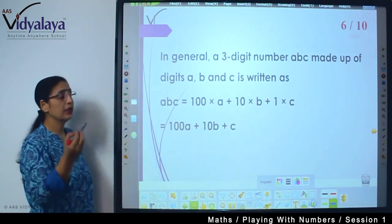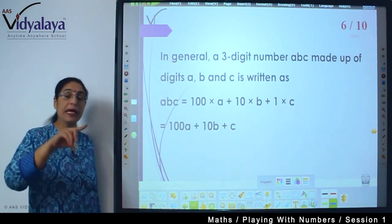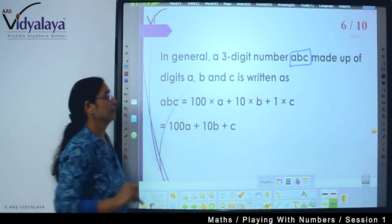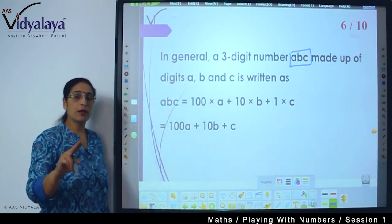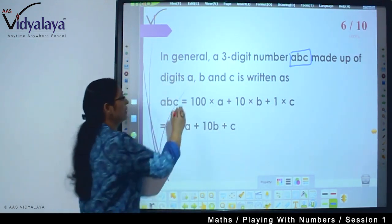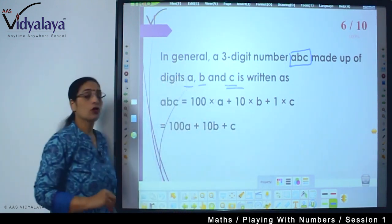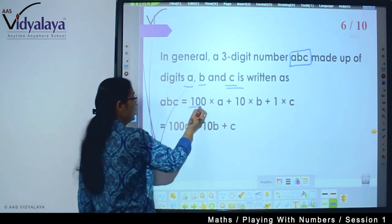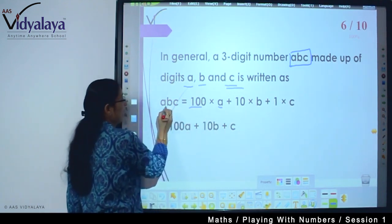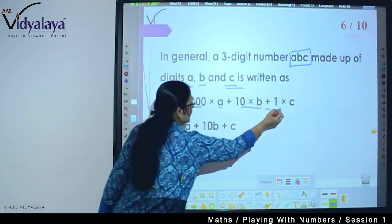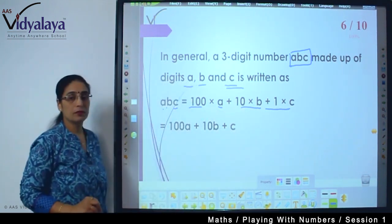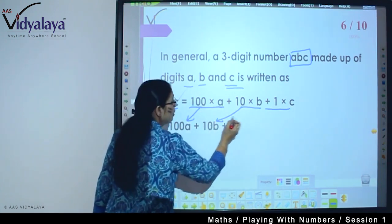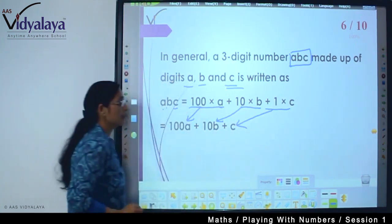So in general a three digit number, just as we took ab example, I am taking the example of abc. So it is made up of three digits that is a, b and c. So how abc number can be written? hundred into a, ten into b plus one into c. So it becomes hundred a, ten b and plus c.